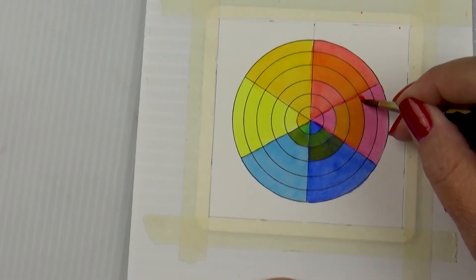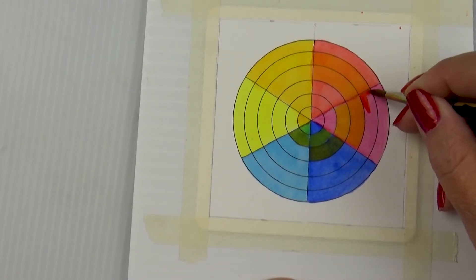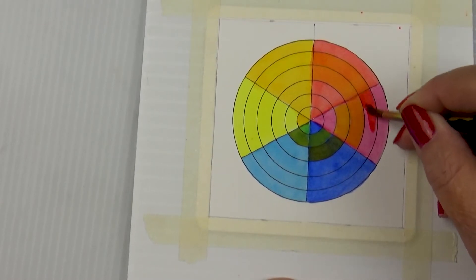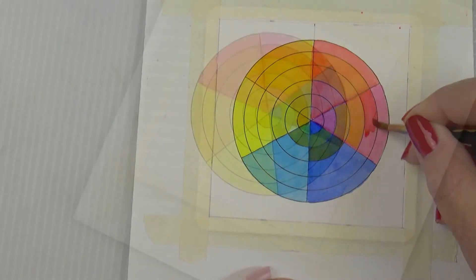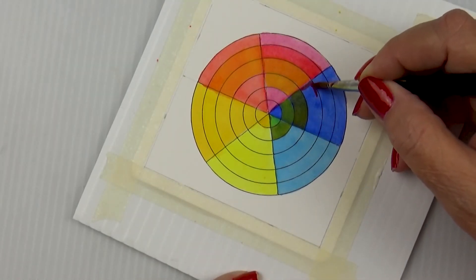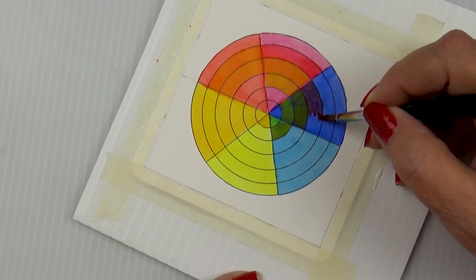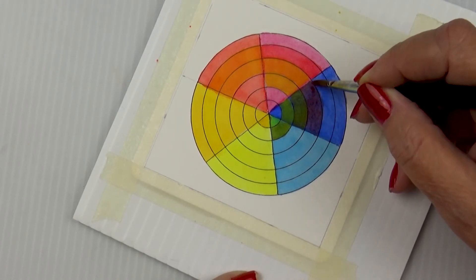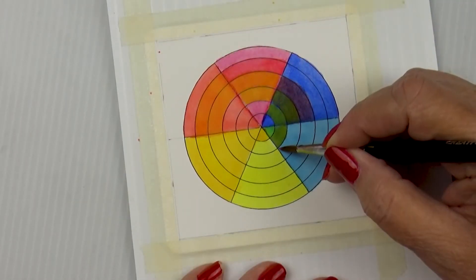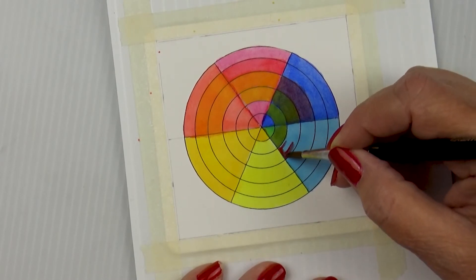Now we're going to move on to Pyrrole Scarlet and we're going to put it in the second concentric circle of Quinacridone Rose. Then the Pyrrole Scarlet is going to go in the third concentric circle of the French Ultramarine. Then it'll go in the fourth concentric circle of the Phthalo Blue.